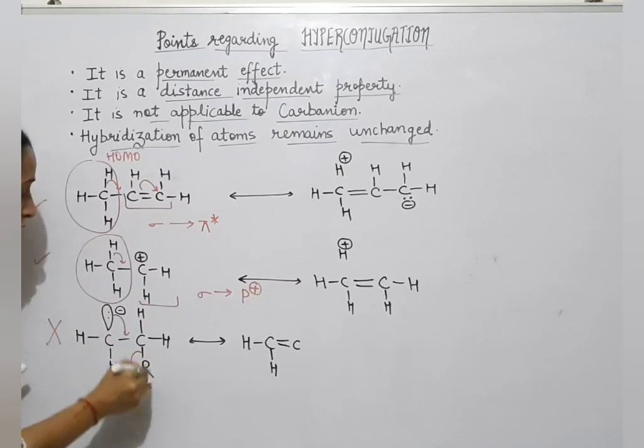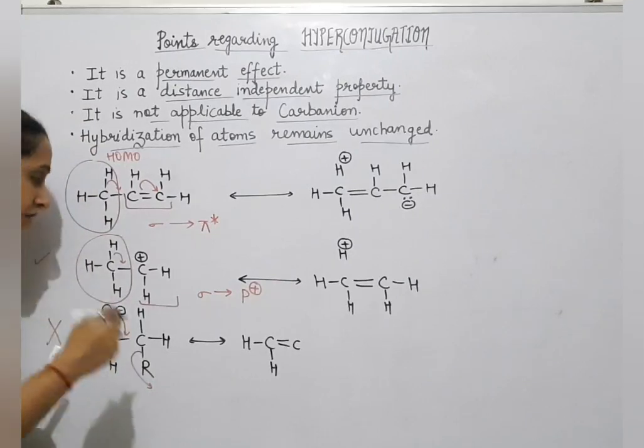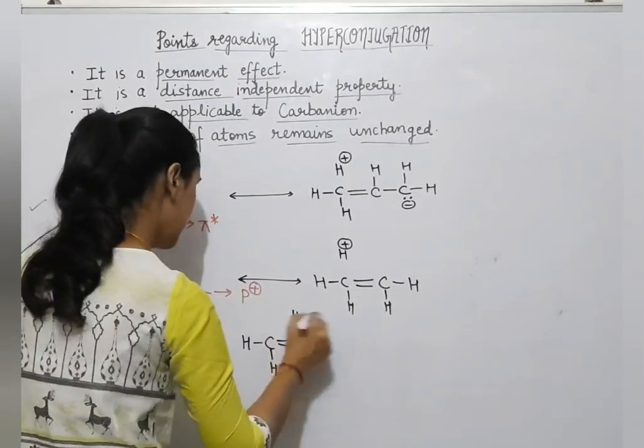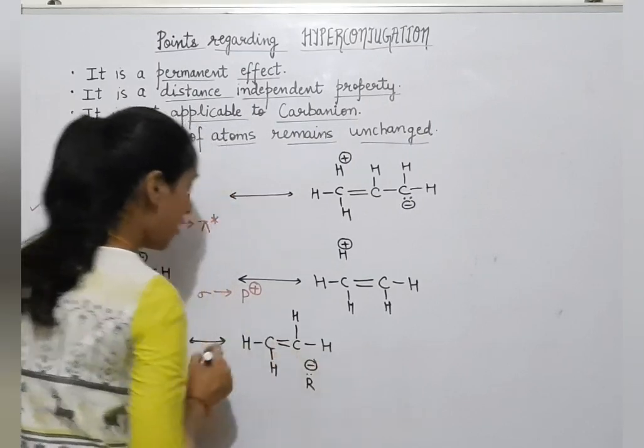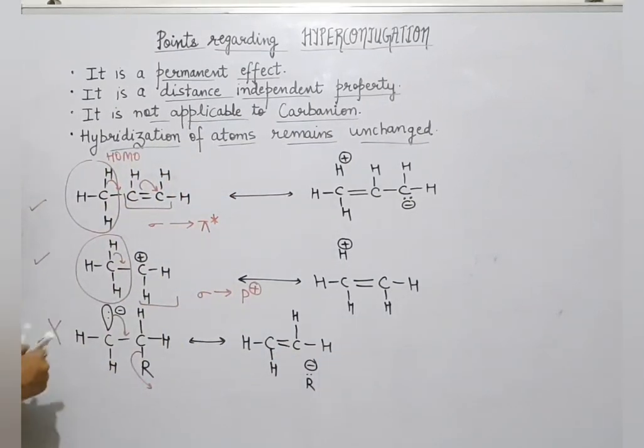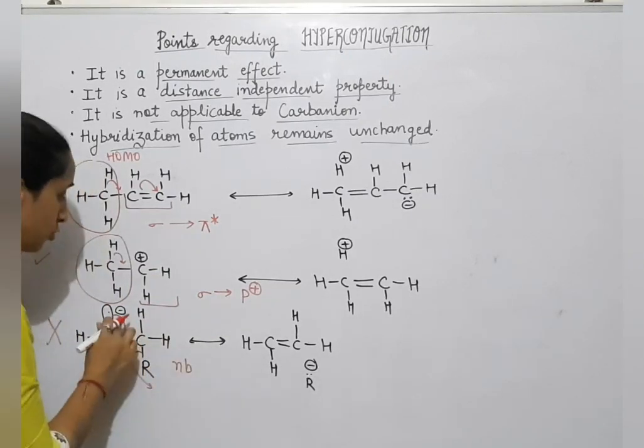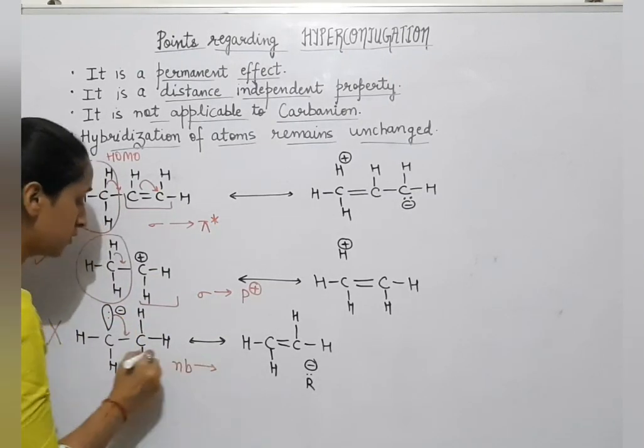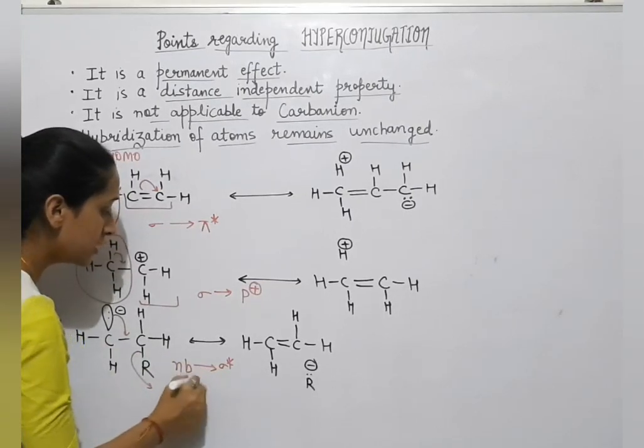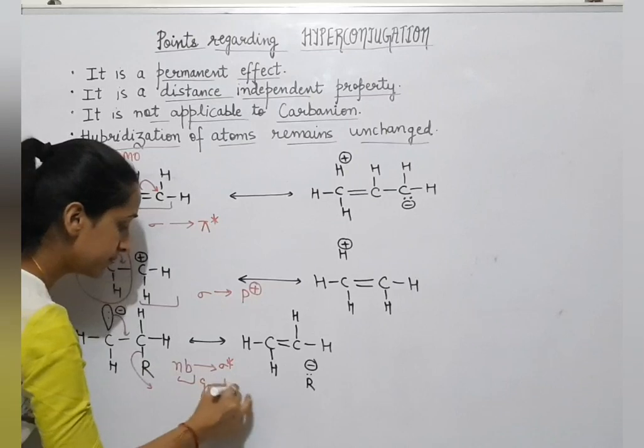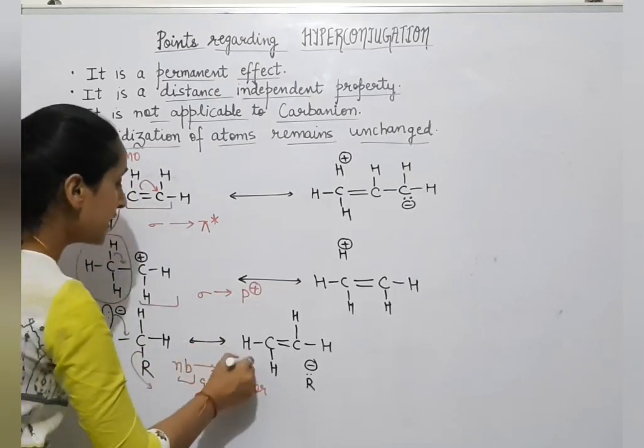The alkyl group will leave negative, which is not a good leaving group. Here, where? Non-bonding to sigma star. Non-bonding to good donor, but sigma star, body acceptor? No, see.